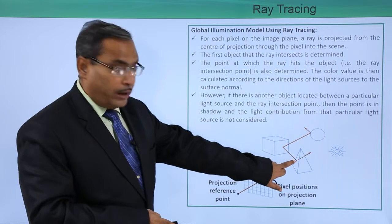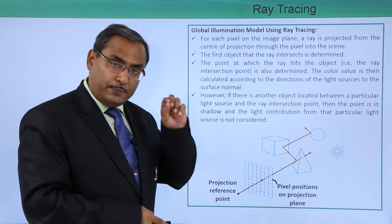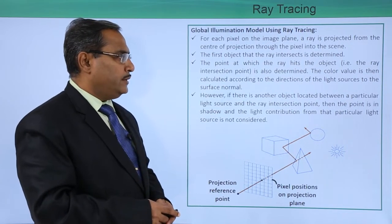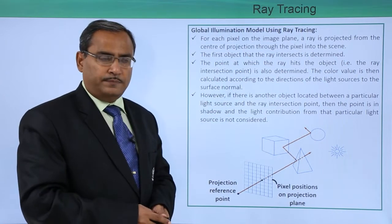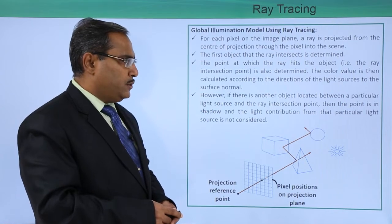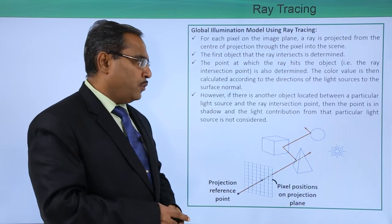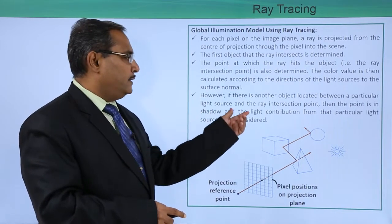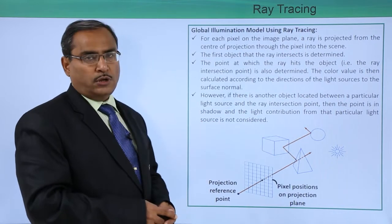The point at which the ray hits the object — that is, the ray intersection point — is also determined. The color value is then calculated according to the direction of the light sources relative to the surface normal. However, if there is another object located between a particular light source and the ray intersection point, then the point is in shadow and the light contribution from that light source is not considered.